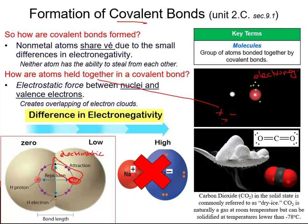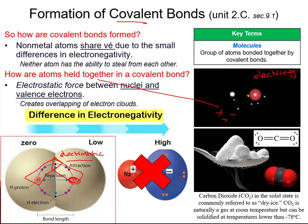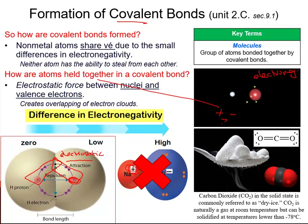That electrostatic force is also present here as well. There are some repulsions happening — we'll talk about that later on. But the electrostatic force, what holds them together, is this attraction between the nucleus and those valence electrons, which is different from ionic bonds in which we have positive ions hooking up with negative ions.